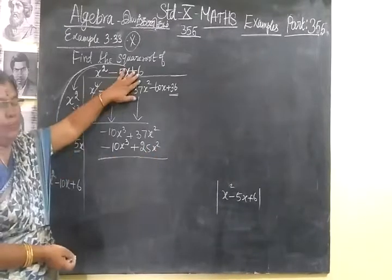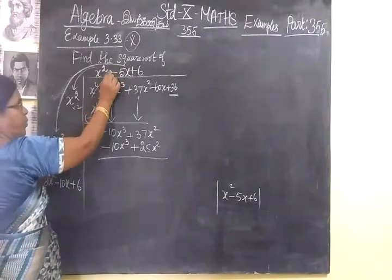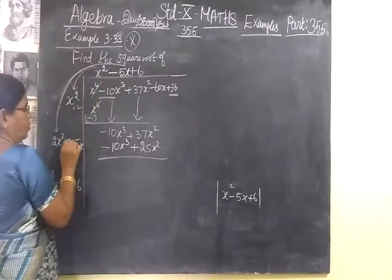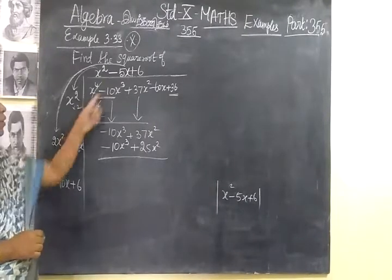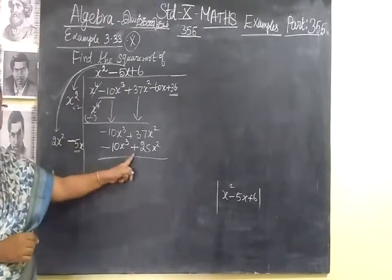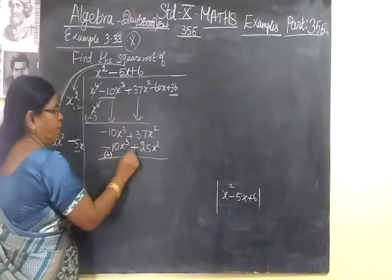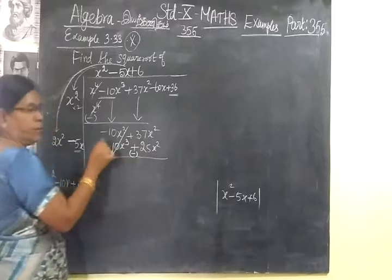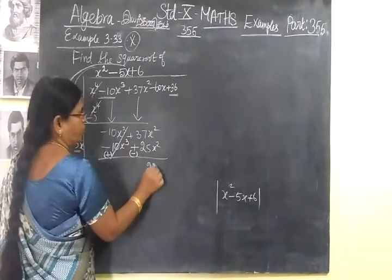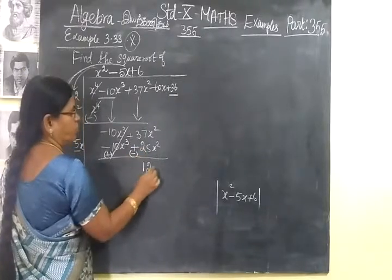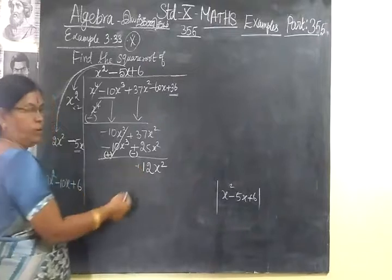This step is easy. Multiply by -5. Minus into minus is plus. Students may commit mistakes here only. Minus into minus is plus. You change the sign: plus here, minus, then cancel it. So 37 - 25 = 12, giving 12x².